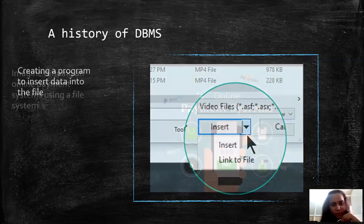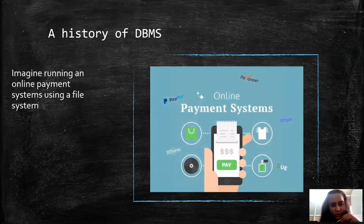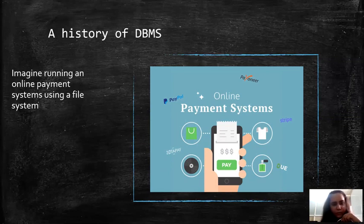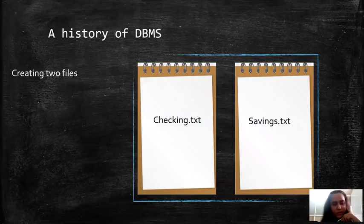Now imagine having this type of file system and running an online payment system. If you are an experienced programmer, you'll write a program and create two files: one is a checking.txt file and another is a savings.txt file. Both files are storing balances of people's checking and savings accounts. So you're running an internet bank.